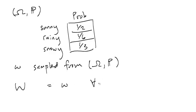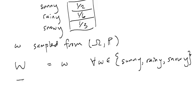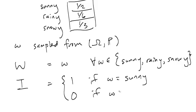And this is true for omega being any of the possible outcomes: sunny, rainy, snowy. On the other hand, I was 1 if omega was sunny, and 0 if omega was either rainy or snowy.